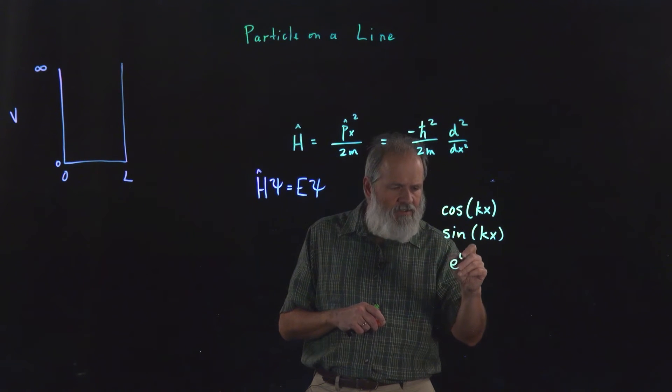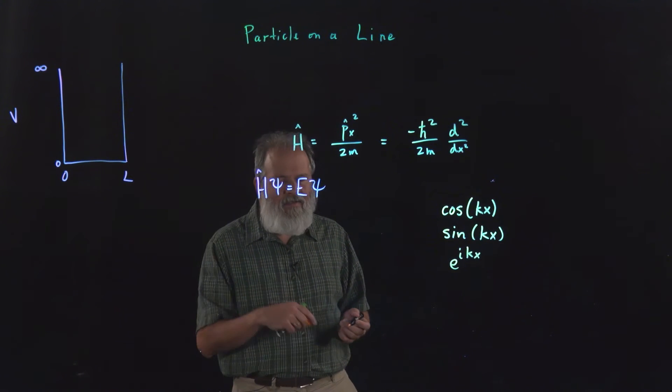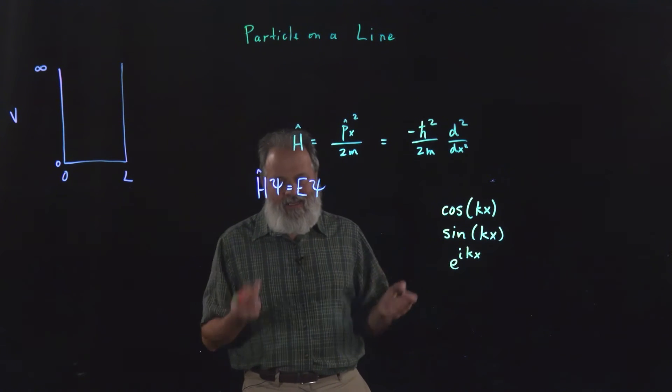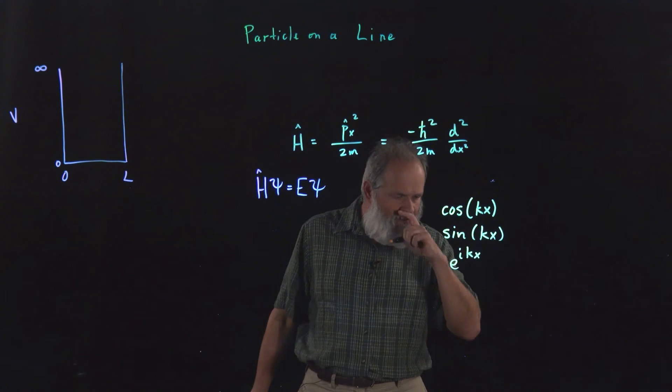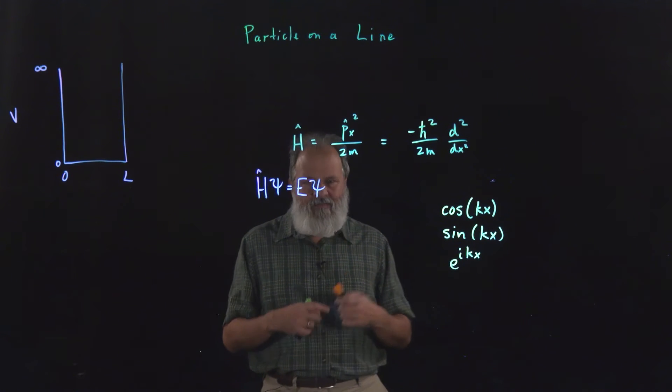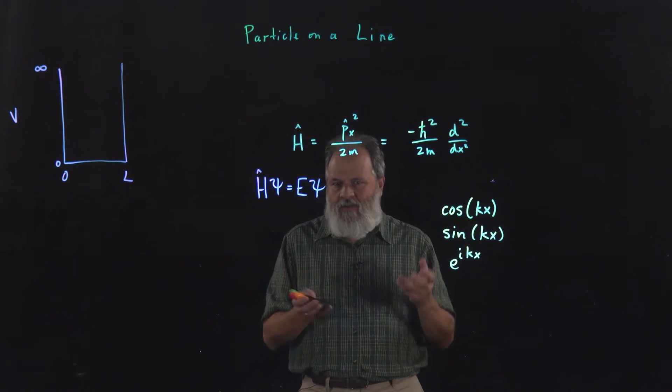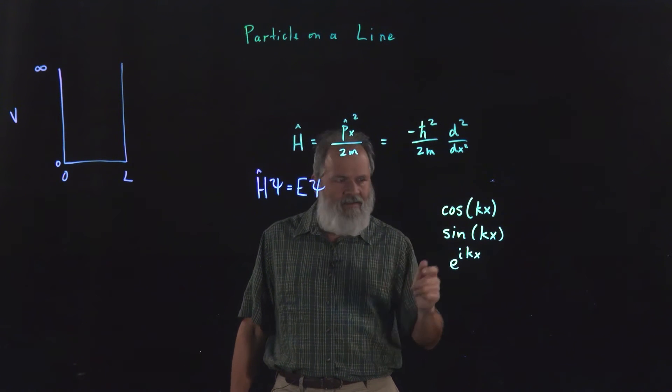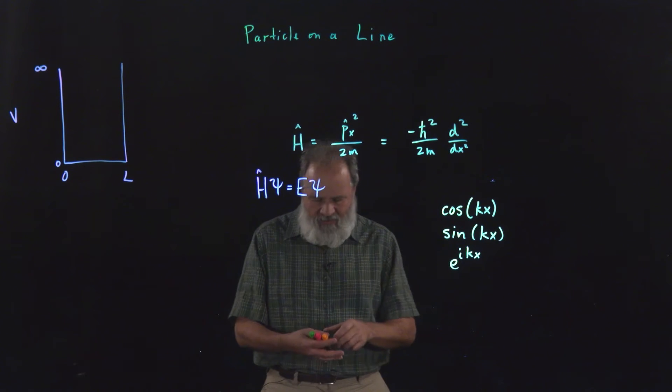There's also the exponential function. The exponential function, the first derivative is constant times the same exponential. So any derivative of an exponential, you're going to get constant times the exponential. When we take the derivative of e to the ikx, we're going to get i times k times the original function. We'll do it twice, we're going to get ik in parentheses squared or minus k squared. Again, it's really the same constant. This gives you minus k squared times the original.